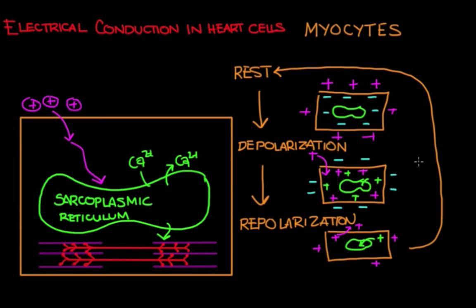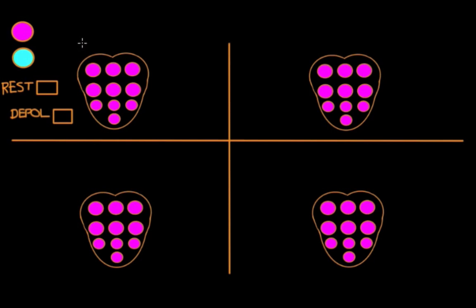We just looked at how electrical activity passes through individual heart cells. Now let's think about how it passes through the entire heart. To look at electrical conduction through the entire heart, we use probes that measure voltage — a negative probe and a positive probe — which together tell us the direction of electrical activity moving across the heart. These probes can only see what's going on on the outside of the cell. Cells at rest are more electropositive on the outside, and depolarized cells are more electronegative on the outside, so a probe registers a resting cell as positive and a depolarized cell as negative.